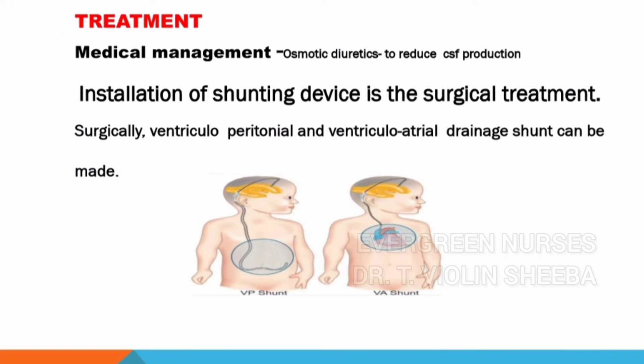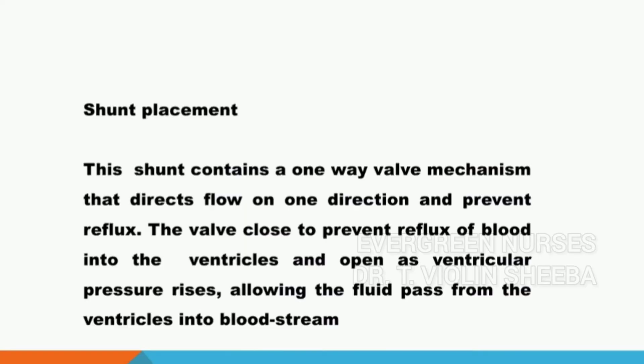The treatment for hydrocephalus includes medical management, which is only temporary — osmotic diuretics are given to reduce CSF production. The main surgical procedure is installation of a shunt device. The shunt is placed either ventriculoperitoneal (VP) or ventriculoatrial (VA). In these two manners the excess amount of CSF is drained out. The first is the VP shunt and the second is the VA shunt.